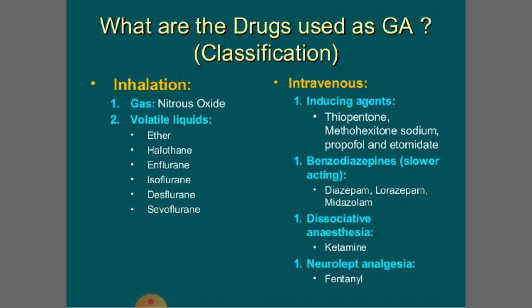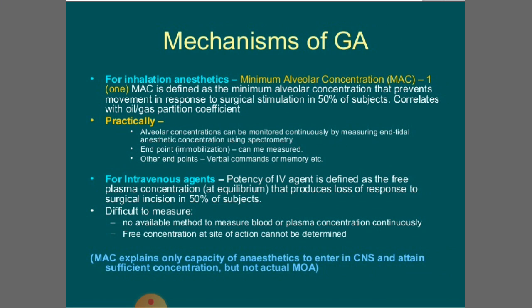The classification of general anesthetics can be organized in three parts. Inhalational anesthetics include gaseous agents such as nitrous oxide, and volatile liquids such as ether, halothane, enflurane, isoflurane, desflurane, and sevoflurane. Intravenous inducing agents include thiopentone, methohexitone sodium, propofol, and etomidate. Benzodiazepines — diazepam, lorazepam, and midazolam — are slower-acting. Dissociative anesthesia uses ketamine, and neuroleptanalgesia uses fentanyl.